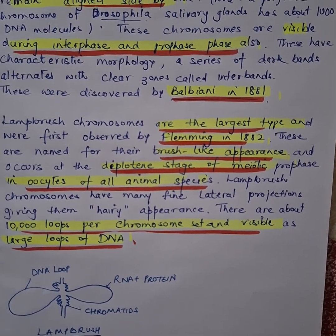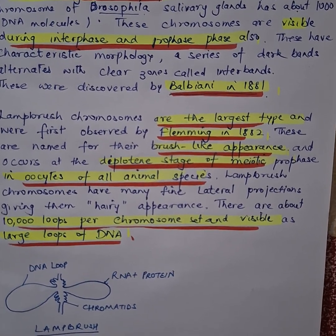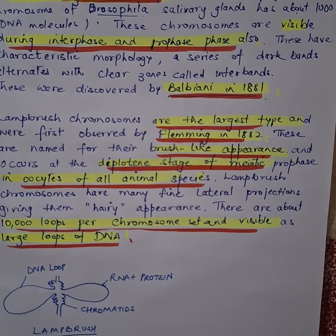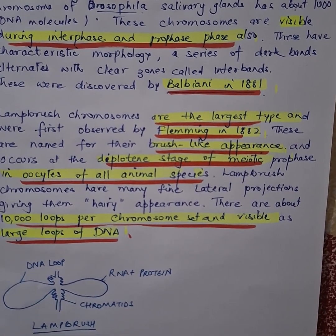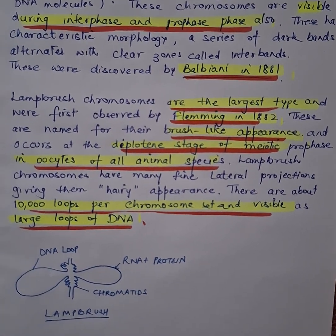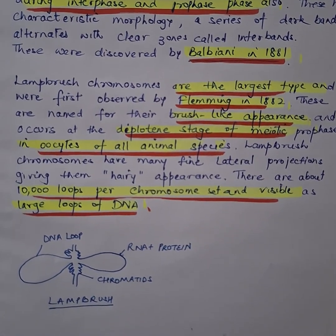Lampbrush chromosomes have a hairy appearance and have about 10,000 loops per chromosome set, visible as large loops of DNA. You can see the diagram.